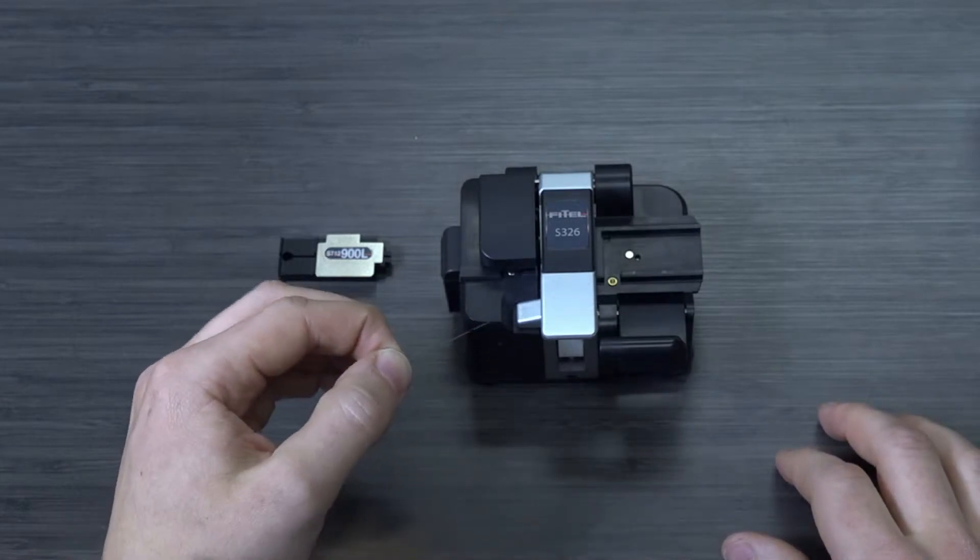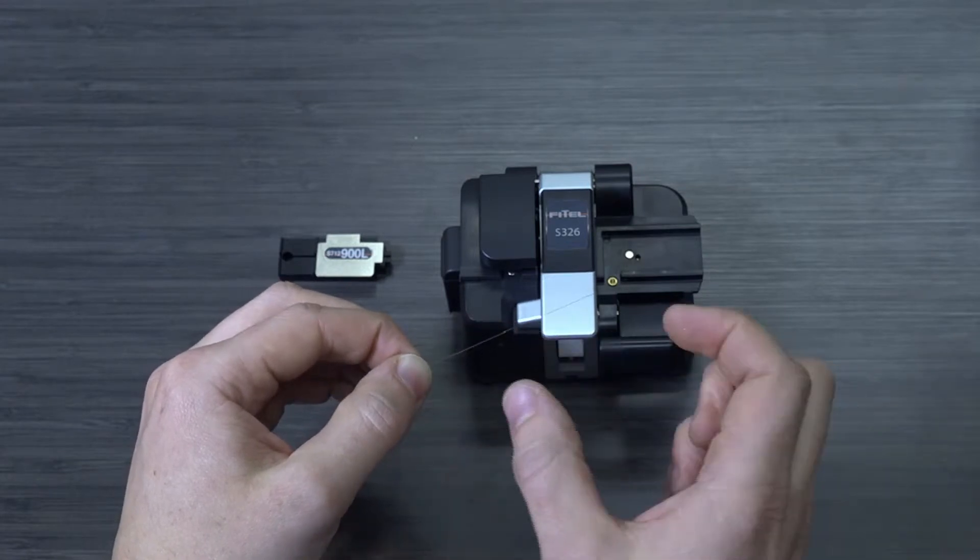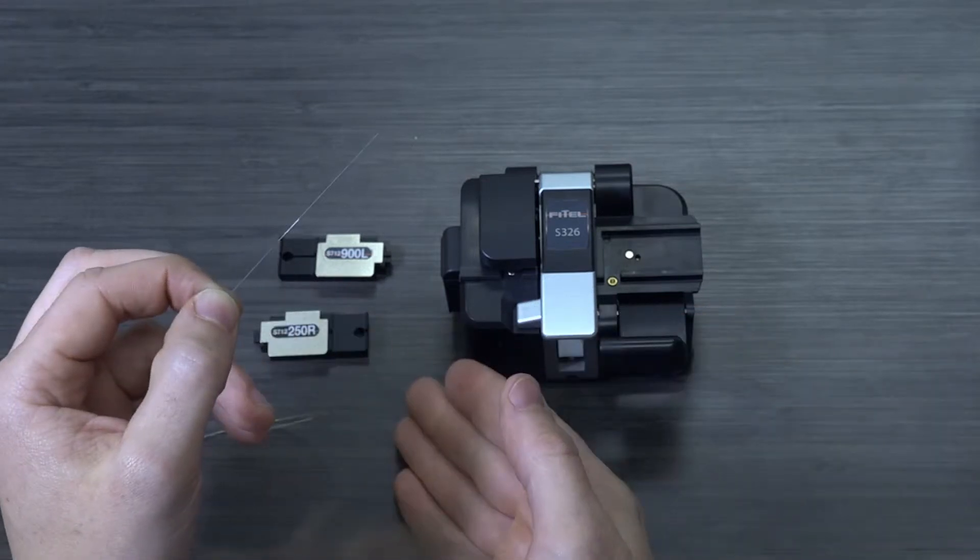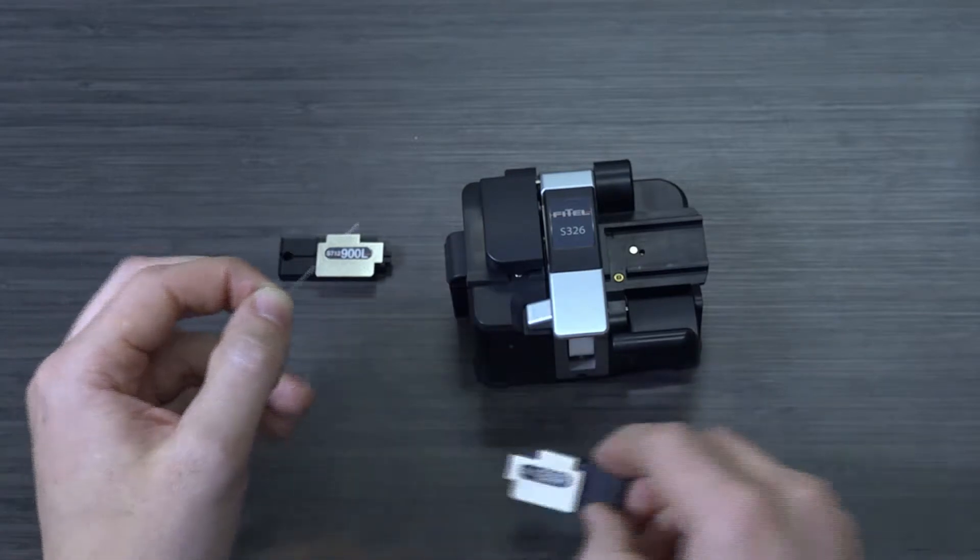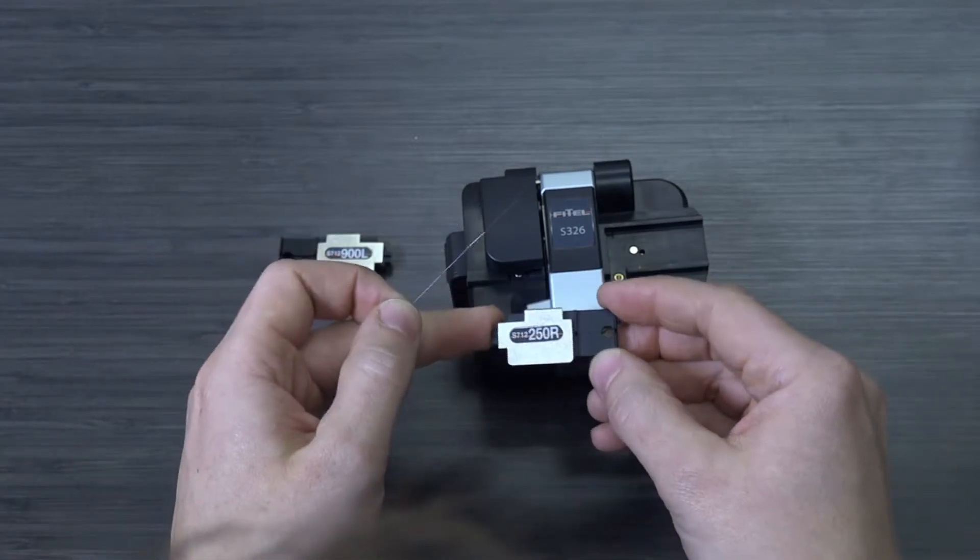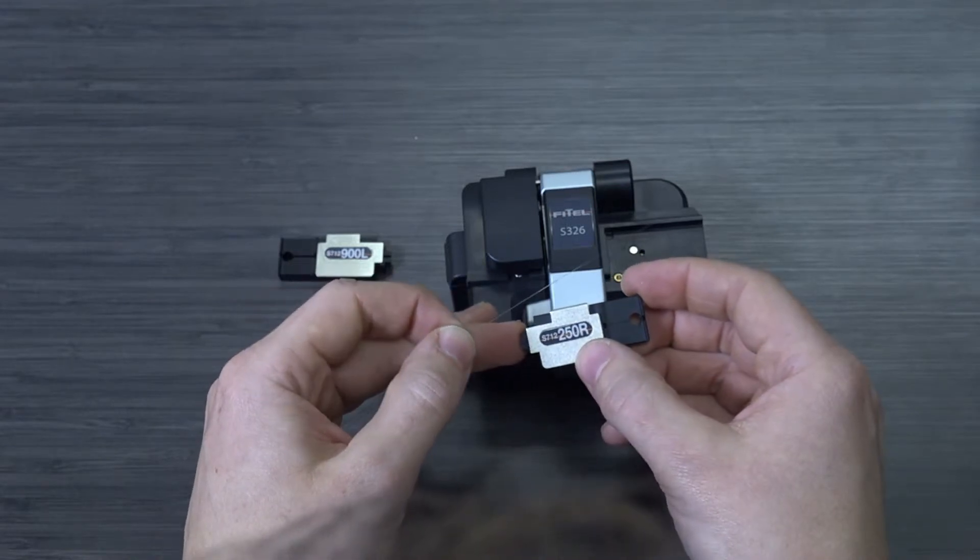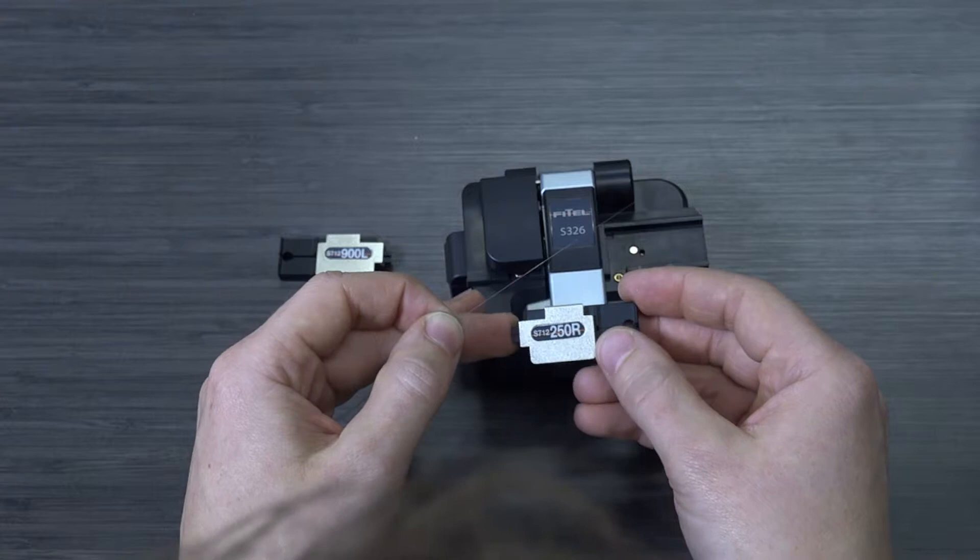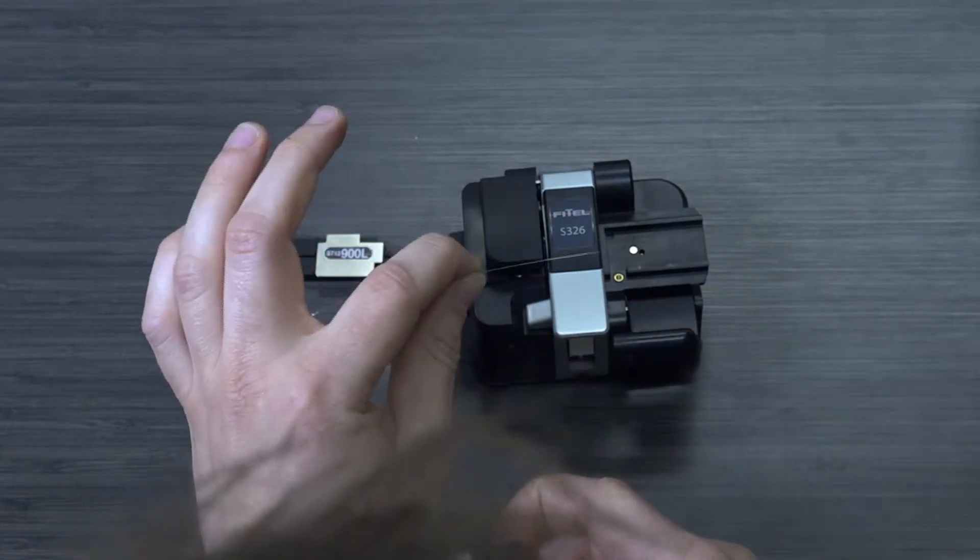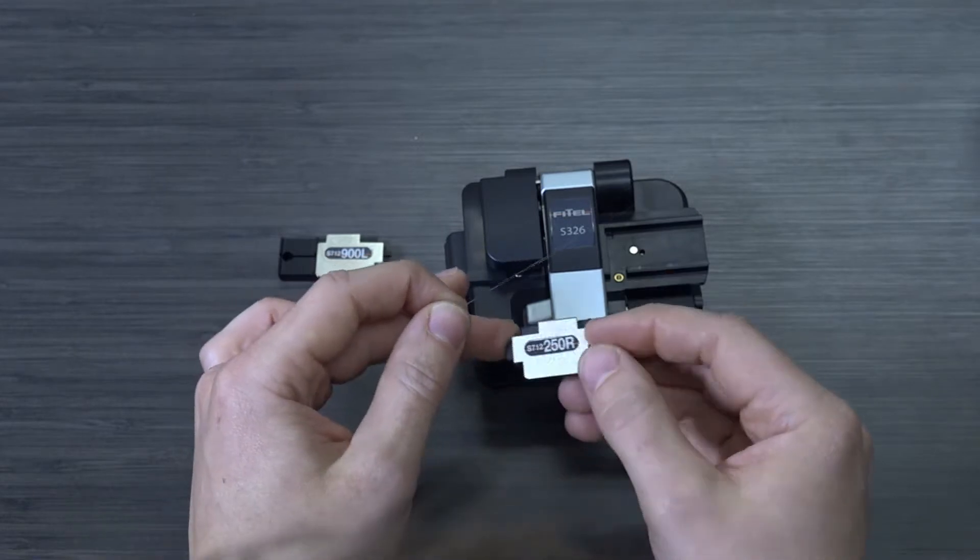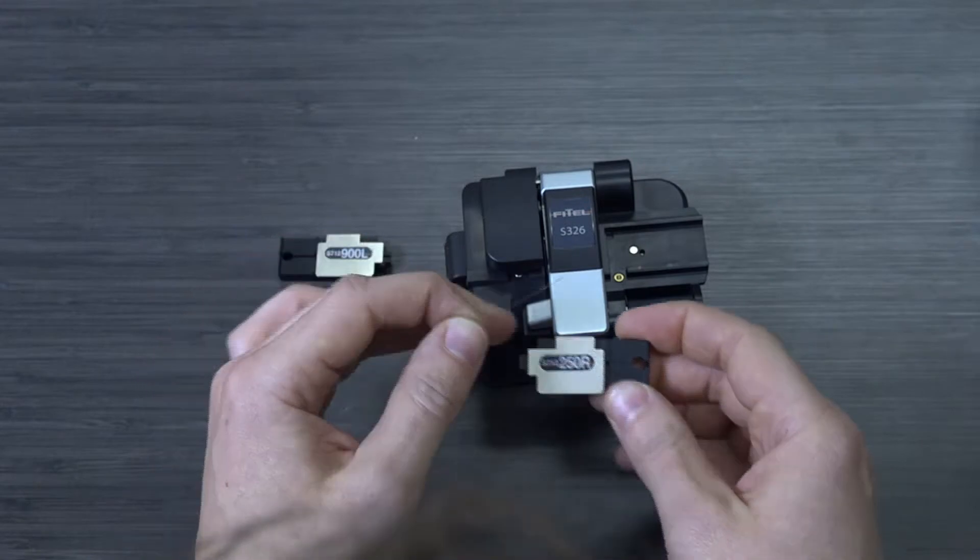So now we have a clean portion of stripped fiber here at the end. The next step is to place this part of the fiber into one of our fiber holders and then give it a nice cleave. So for that process I'm going to select this fiber holder labeled 250R. The 250 represents 250 microns, that refers to the diameter of the fiber we're placing in here, so 250 microns is the diameter of bare fiber in most cases, and then the R stands for right, so this one will be placed in the right side of the fusion splicer.